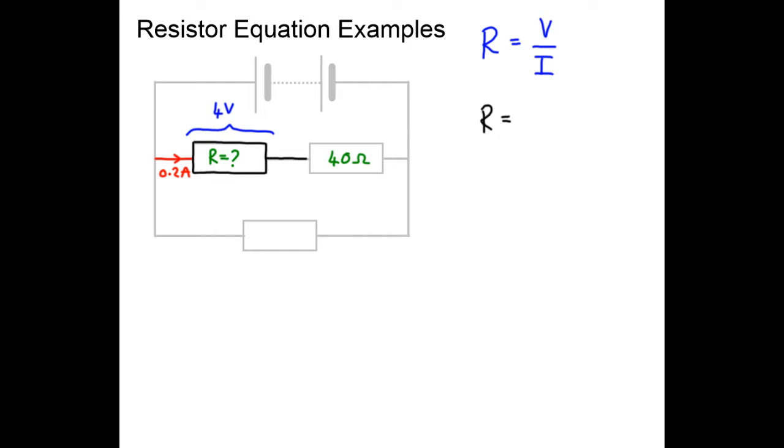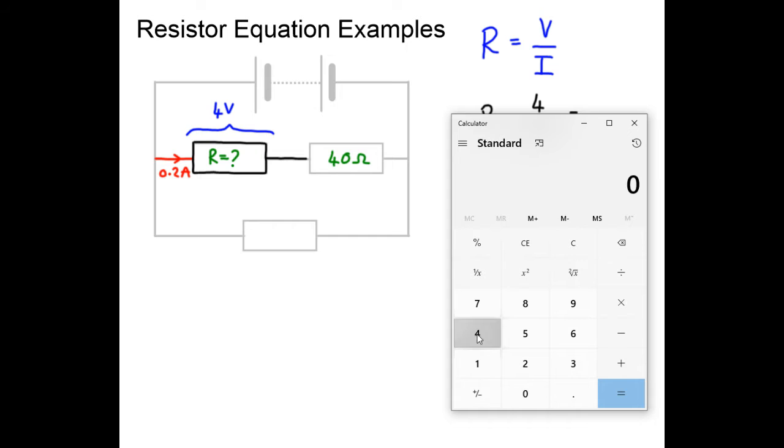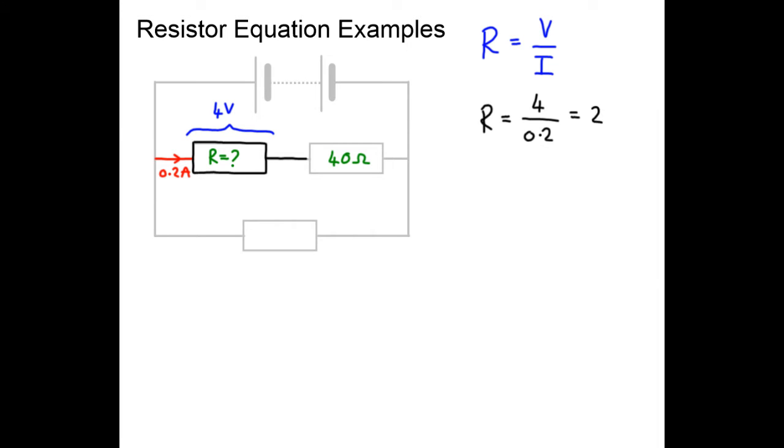So we can work out that R equals 4, the potential difference, divided by 0.2. Now what does that equal? If we get our calculator, 4 divided by 0.2 equals 20. So the answer is 20 ohms, so we have identified our first component.